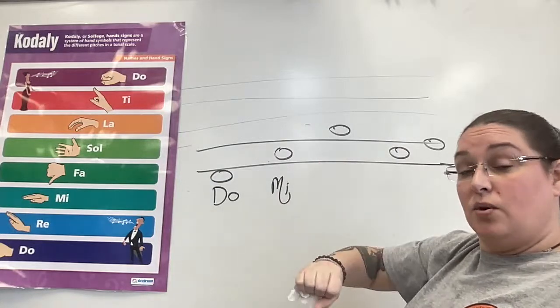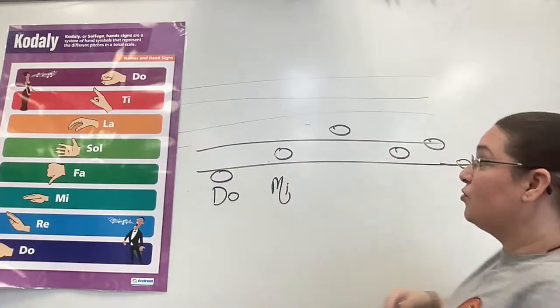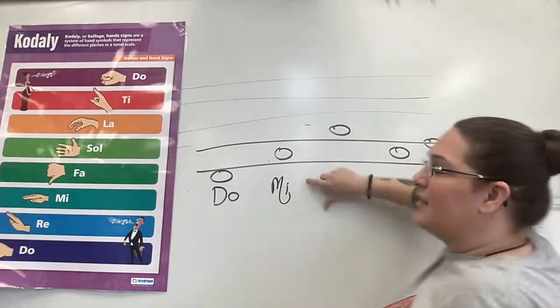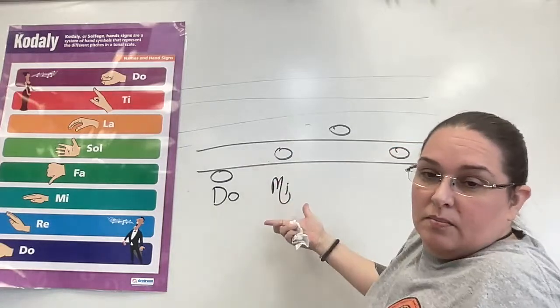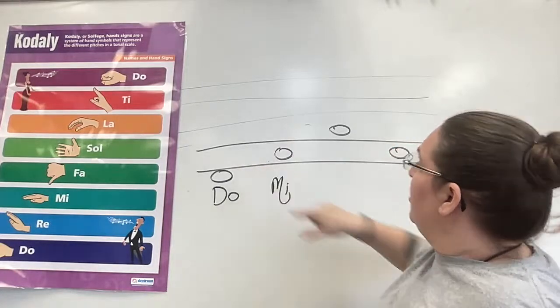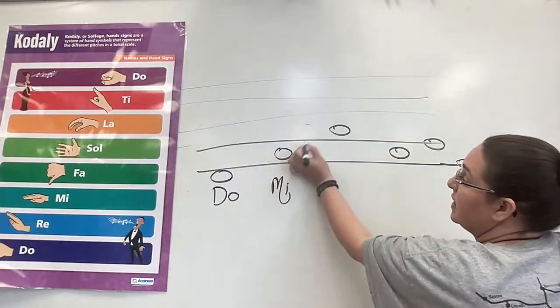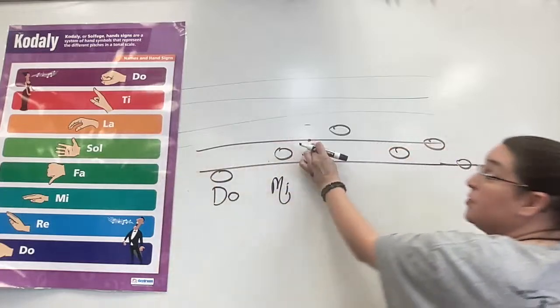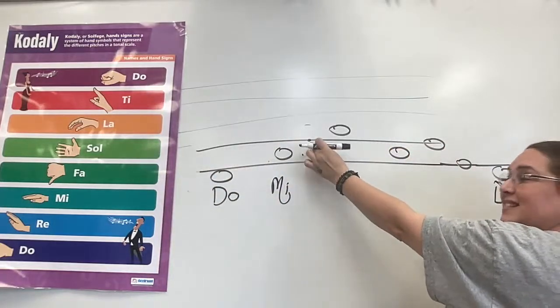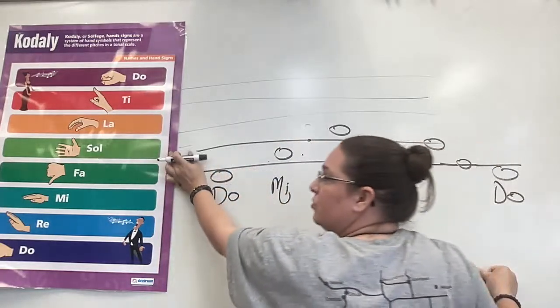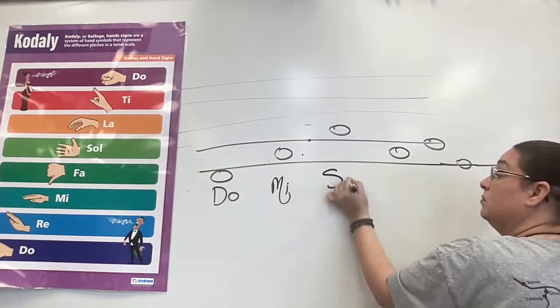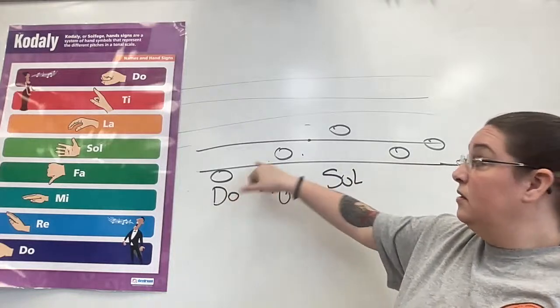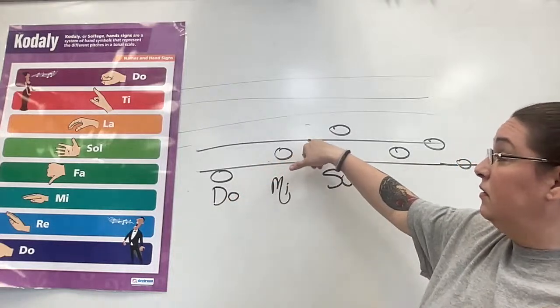The Re is still there. We're just not singing it. So you can't make this pitch the Re because it's not correct. You've got to skip Re. So same thing here. This is Mi. The next line would be what? Correct. It'd be Fa, but there's no pitch there. So we're not singing that pitch. So we have to skip that pitch and go to the next note, which is Sol.